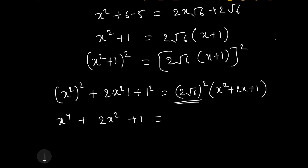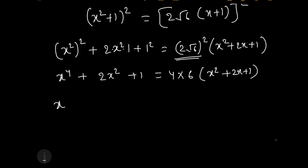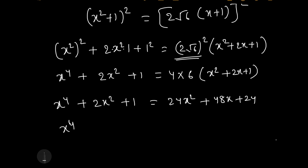Expanding (x squared plus 1) squared gives x to the power 4 plus 2x squared plus 1. Expanding 24(x plus 1) squared gives 24x squared plus 48x plus 24. Bringing all terms to the left: x to the power 4 plus 2x squared plus 1 minus 24x squared minus 48x minus 24 equals 0, which simplifies to x to the power 4 minus 22x squared minus 48x minus 23 equals 0.